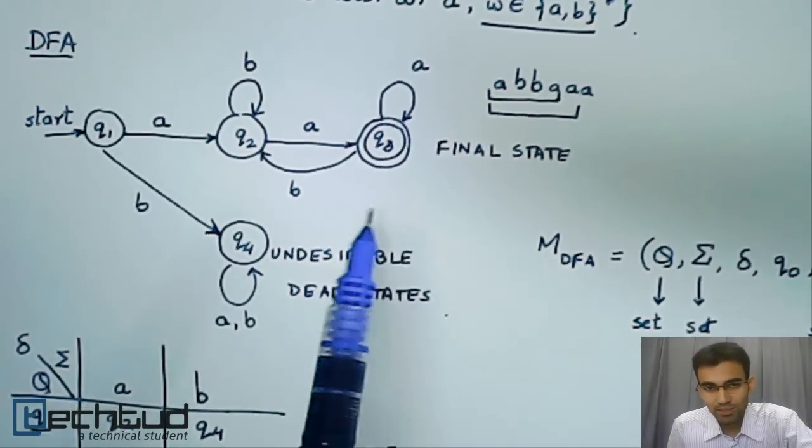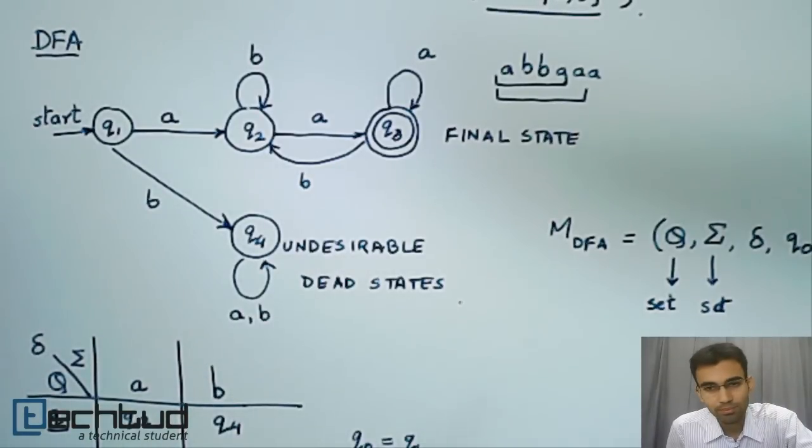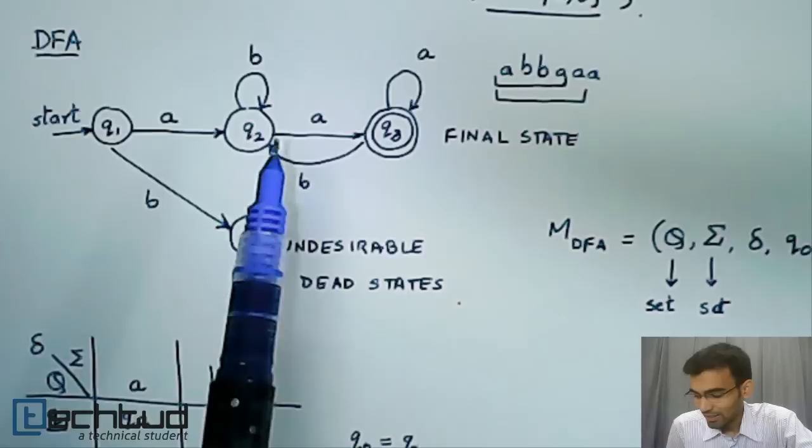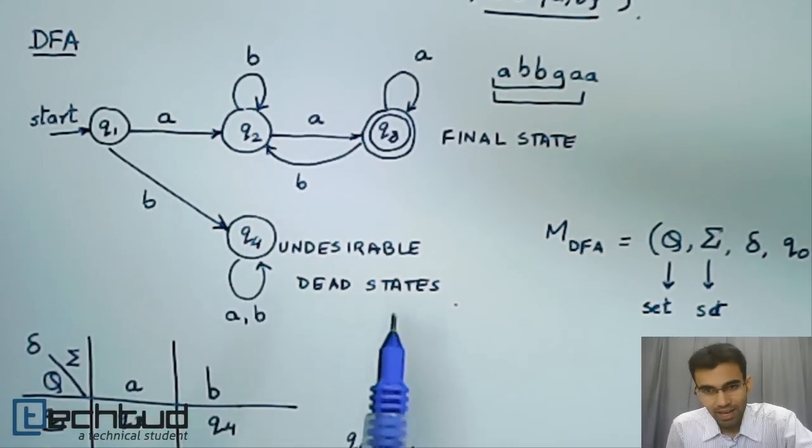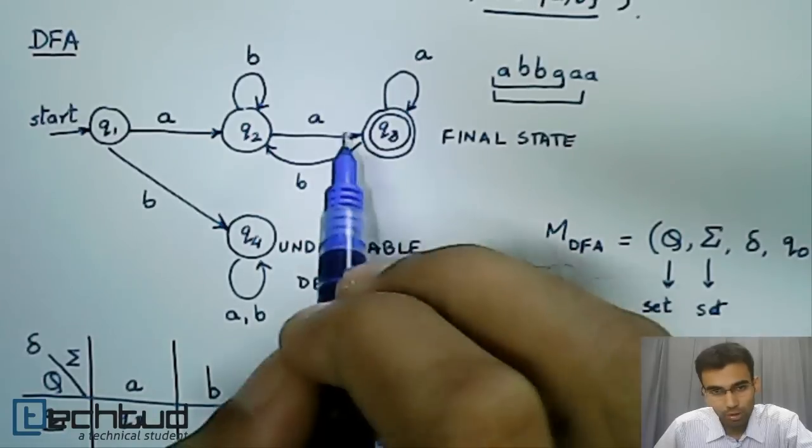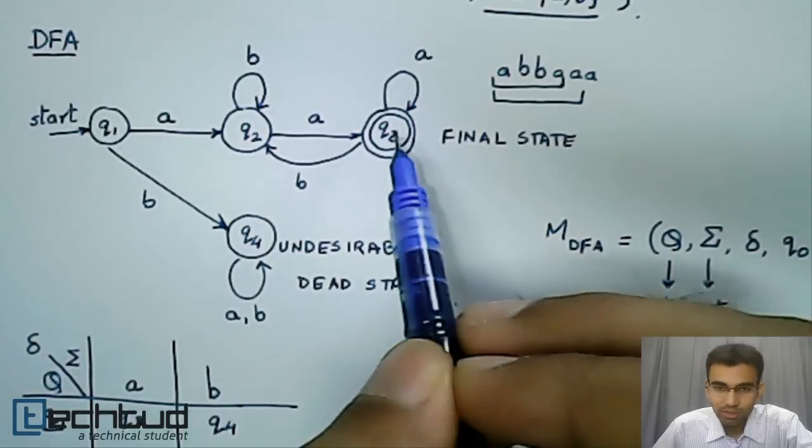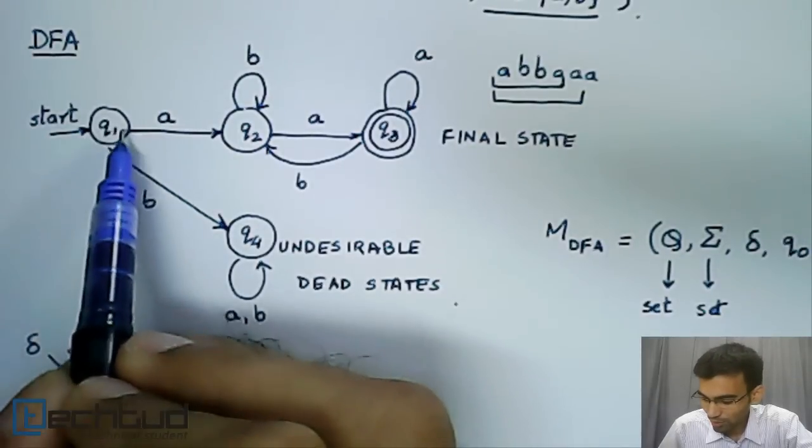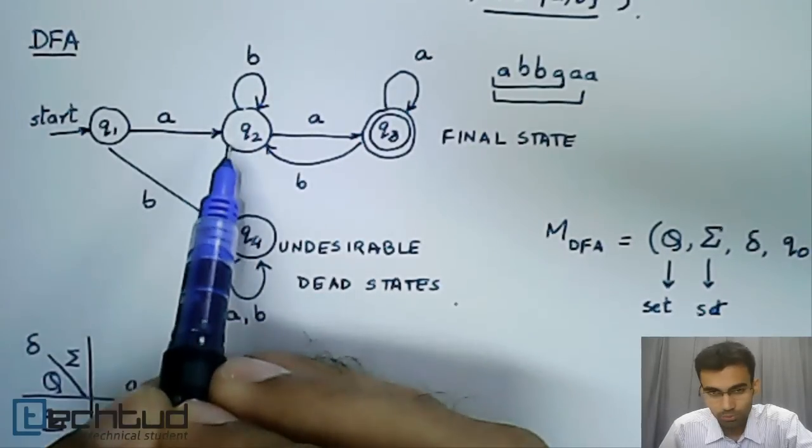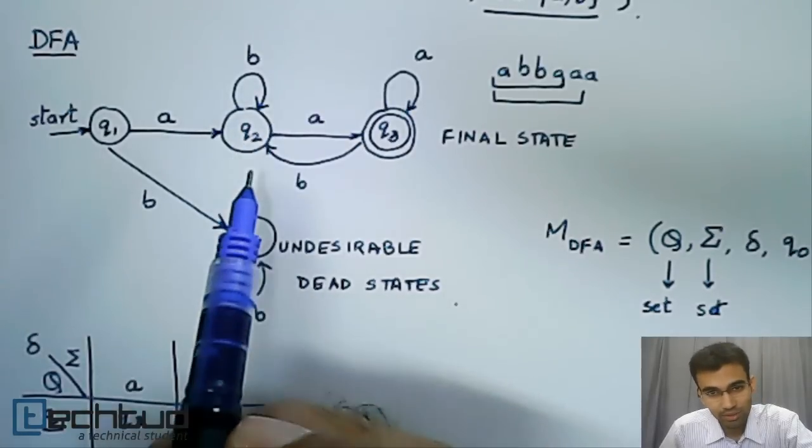Alright, so we saw how to draw a DFA for a particular language. And we said that the state space for this particular DFA is Q1, Q2, Q3, Q4. Now typically in Q2, it's possible for me to have read A, B. I could be in Q2. Had I read A, B, B, I would still be in Q2 because I would have gone from Q1 on an A to Q2, read a single B, remain in Q2, and read the third B and remain in Q2.